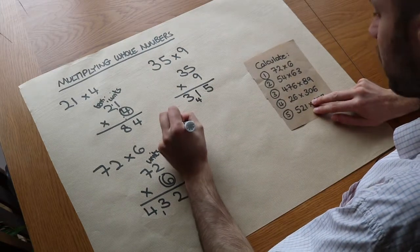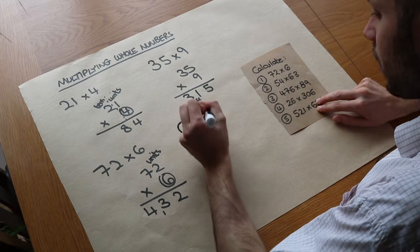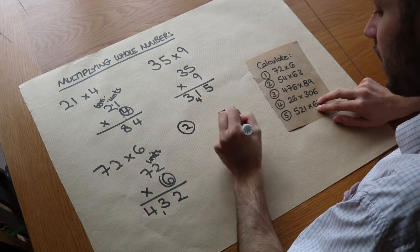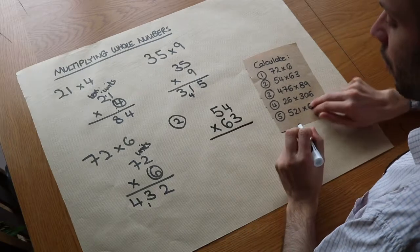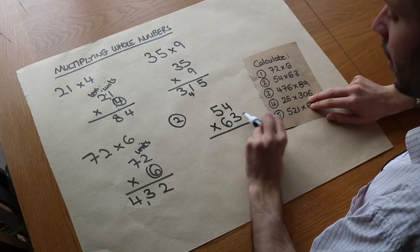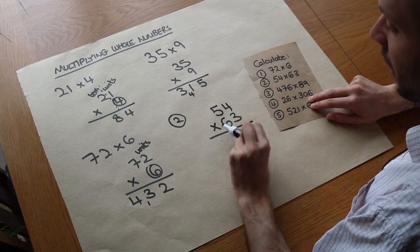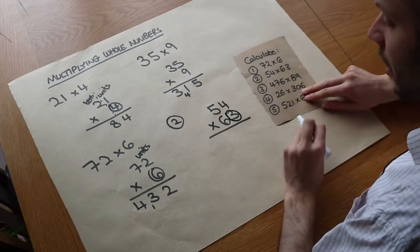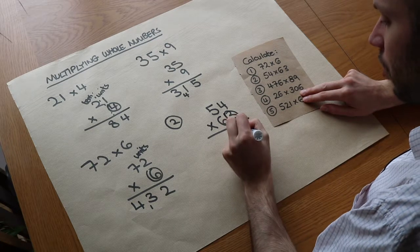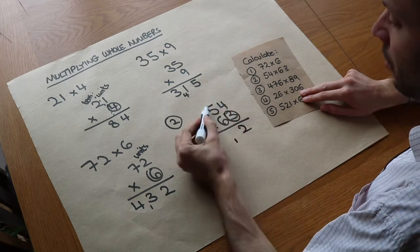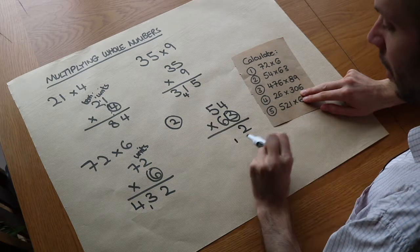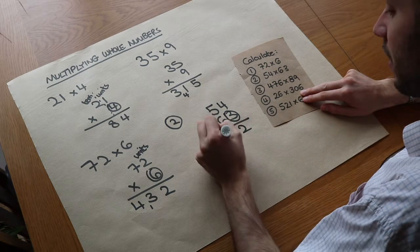Now question 2: 54 multiplied by 63. We focus on each digit in the second number from right to left, so let's focus on the 3 first. We do 4 times 3, which is 12 — put 2, carry the 1. Then we do 5 times 3, which is 15, plus the extra 1 is 16.